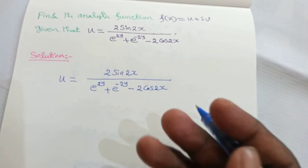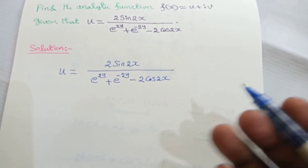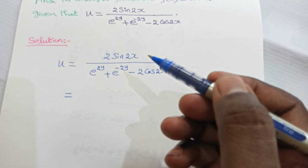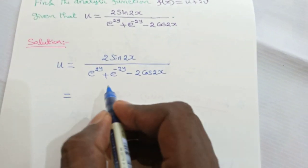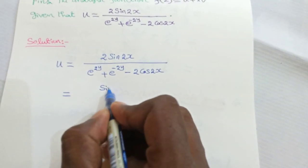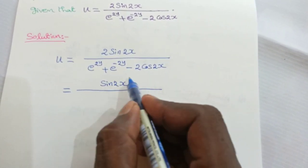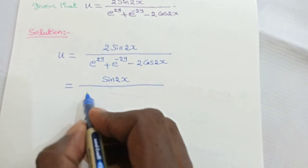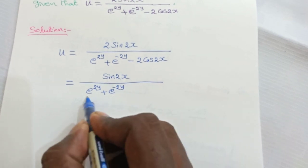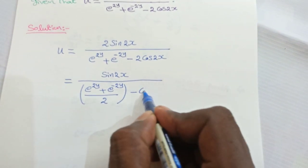Now I am going to rewrite this function — it is not necessary, but it may simplify the problem. By dividing 2 in the numerator and denominator: dividing 2 in the numerator cancels the 2, giving sin(2x). Dividing 2 in the denominator gives (e^(2y) + e^(-2y))/2 for that term.